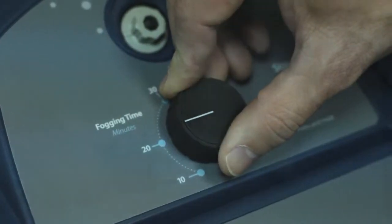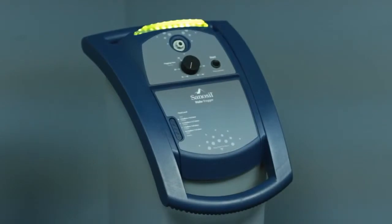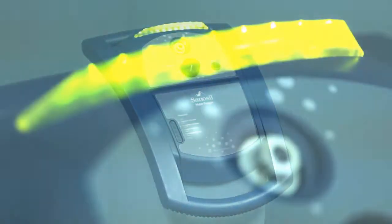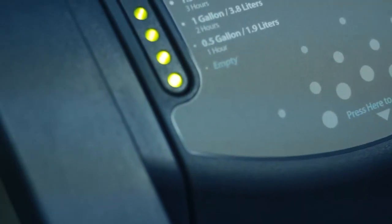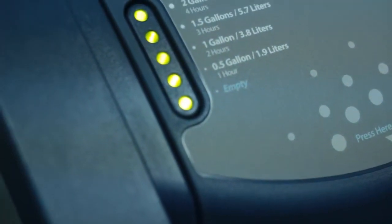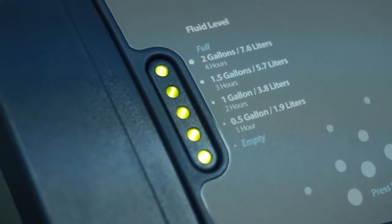Once the room is prepared, plug the Halo into any standard wall outlet. Upon plugging in the Halo, the status indicator light will illuminate green indicating the Halo is ready to use. The fluid indicator lights will also illuminate to let you know the level of fluid in the reservoir and if you need to add more Sanosil disinfectant.